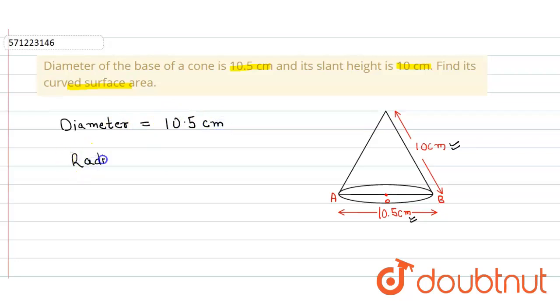The radius will be half of the diameter. We write it as 10.5 upon 2. We can further simplify it as 105 upon 20. Here we cancel with 5, so we get 4 in the denominator and 21 in the numerator. Ultimately, it will be 21 by 4 cm.